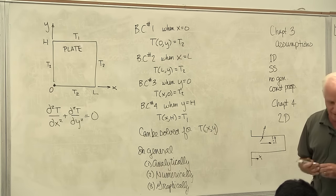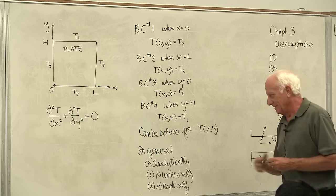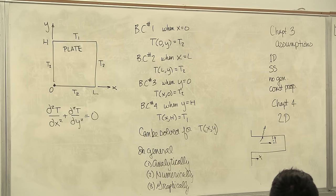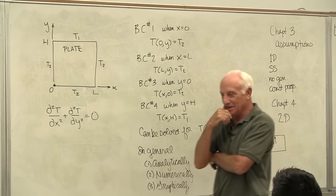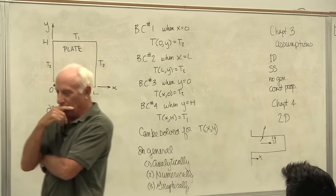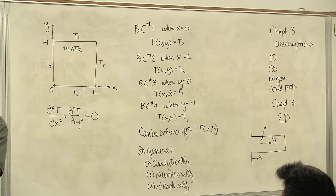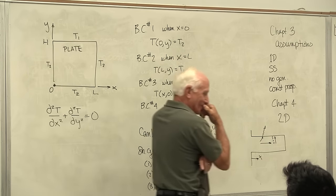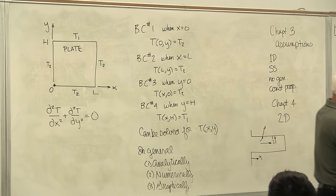In the graduate course you spend roughly 40 hours on Chapter 4 topics alone — covering numerical methods and analytical solutions. Here we're spending about two class meetings on it, so we're barely scratching the surface. If your interest is in thermal sciences as an ME, there are graduate courses in conduction, convection, and radiation heat transfer, plus advanced fluids and viscous flow.